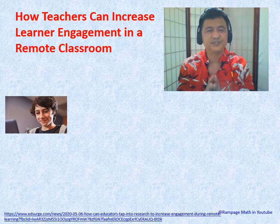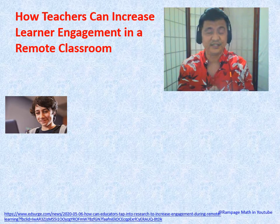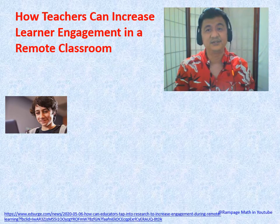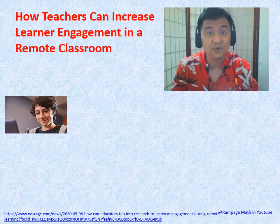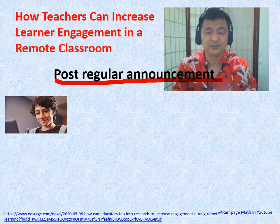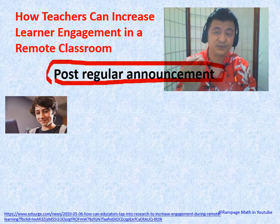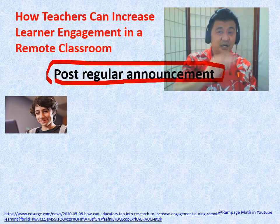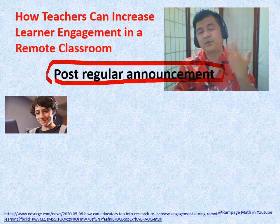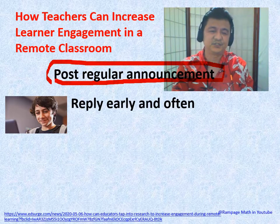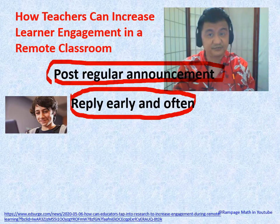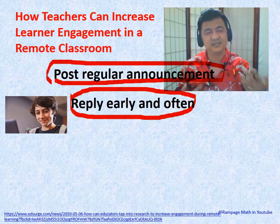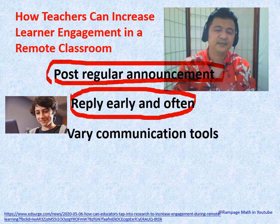How can teachers increase learner engagement in a remote classroom? Number one: post regular announcements so students know what to do today, next week, and what topics are coming. If they're aware of what's happening, they can stay engaged. Number two: reply early and often. If you reply after a week or two weeks, it's meaningless — the kids will lose interest and feel the teacher doesn't care.